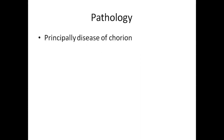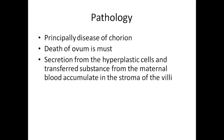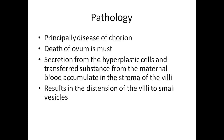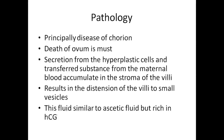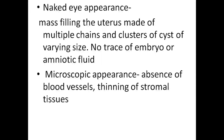Pathology: principally it is a disease of the chorion; death of the ovum is a must. Secretion from hyperplastic cells and transudative substance from the maternal blood accumulate in the stroma of the villi, resulting in distension of the villi to small vesicles. This fluid is similar to ascitic fluid but rich in HCG. Naked eye appearance: the uterus is filled with a mass made of multiple chains and clusters of cysts of varying size, with no trace of embryo or amniotic fluid. Microscopic appearance: absence of blood vessels and thinning of stromal tissues are seen.